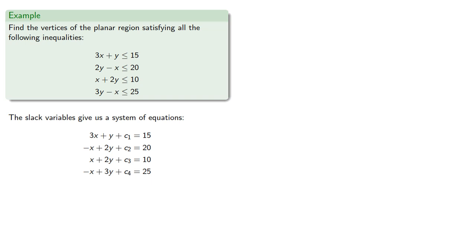So the slack variables give us a system of equations. Since this is a system of four equations and six unknowns, it will generally have an infinite number of solutions.